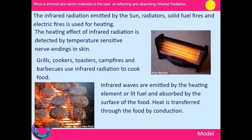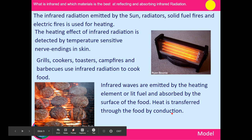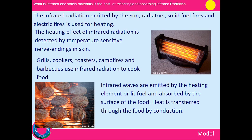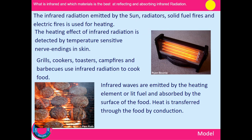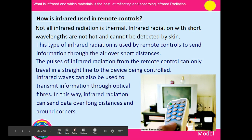Grills, cookers, toasters, campfires, and barbecues all use infrared radiation to cook food. Infrared waves are emitted by the heating elements or fuel and absorbed by the surface of the food — that's why you get cooked chicken rather than raw. Heat is then transferred through the food by conduction, with particles vibrating as the temperature rises.